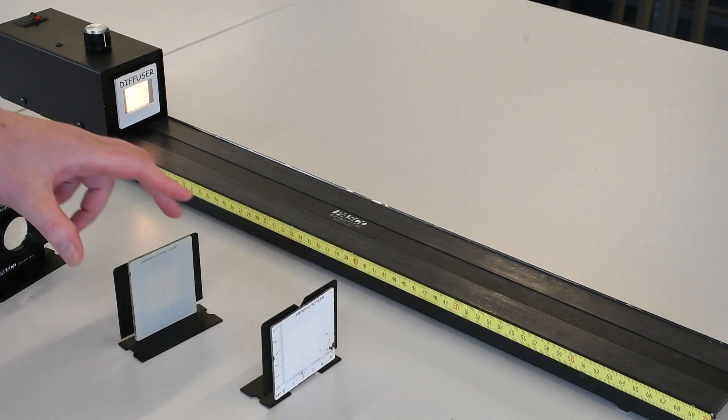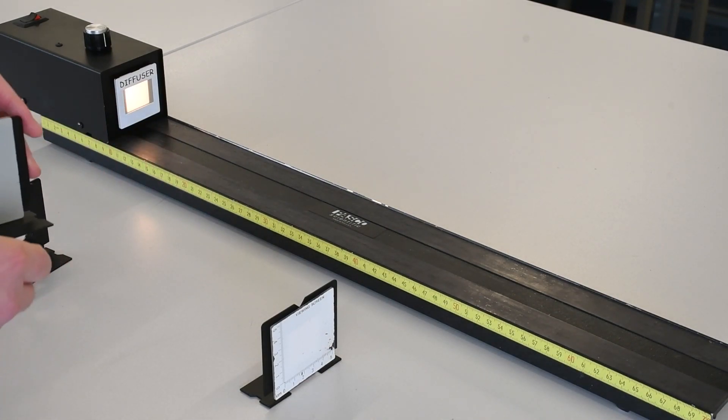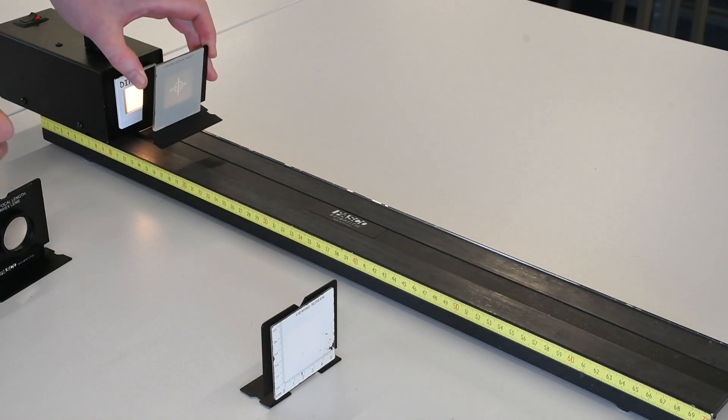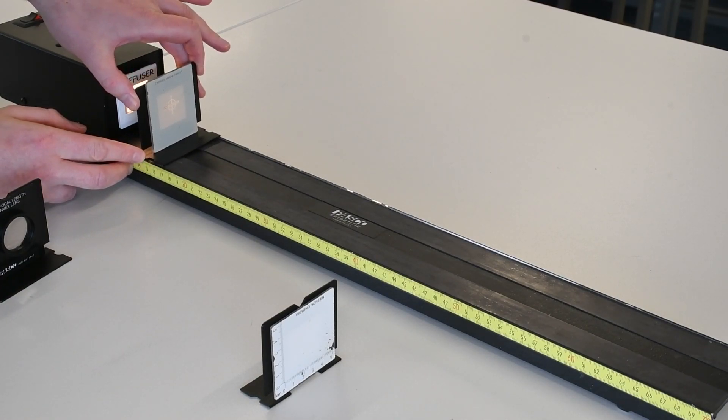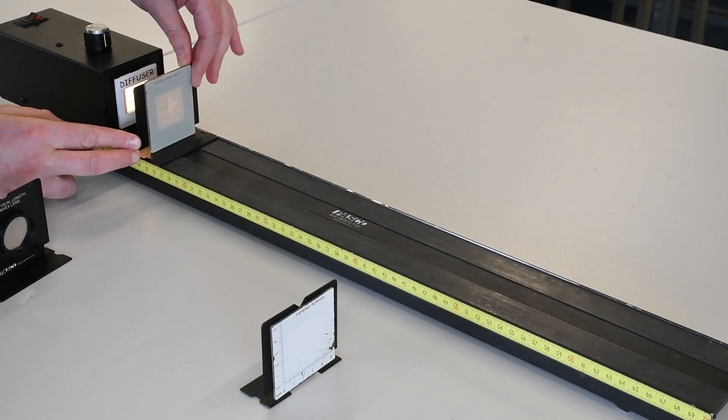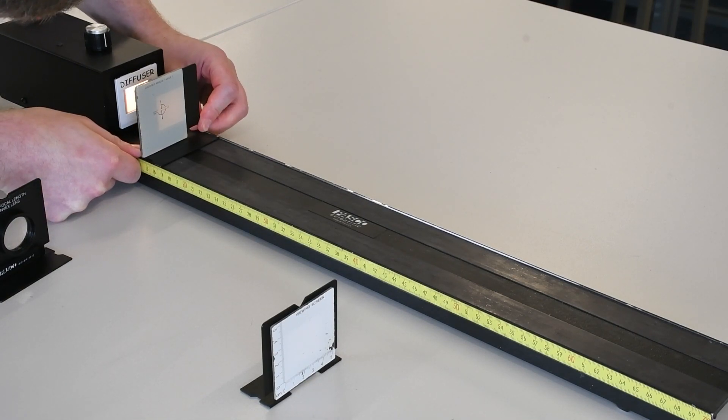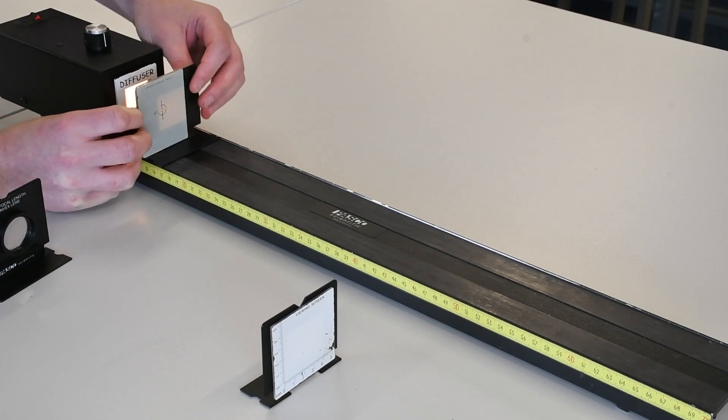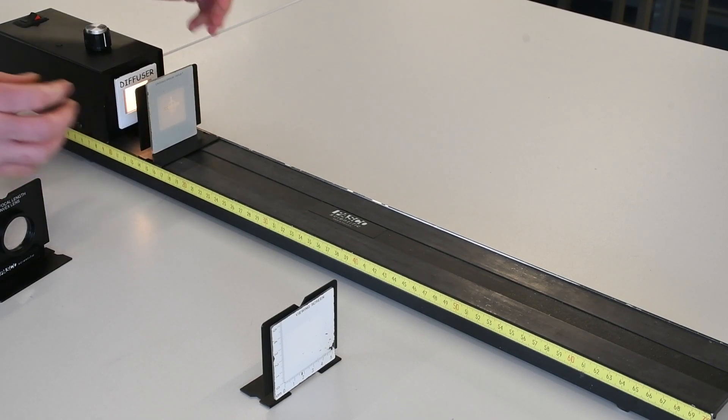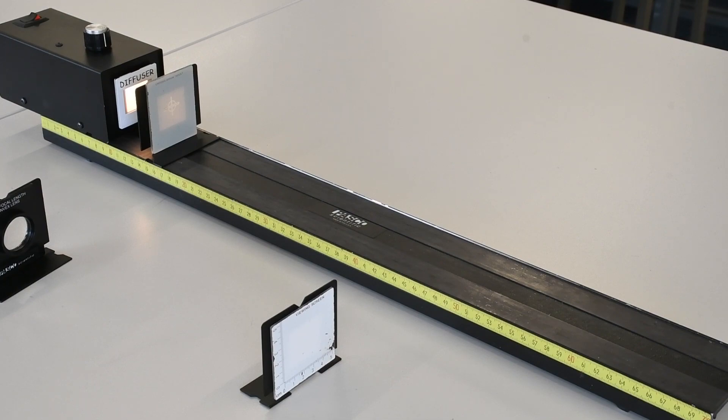So our first step will be to put our target onto our optical table. So I'm going to align the forward face of our target at 15cm on our optical table. That will allow for an easier measurement of the object distance later on.